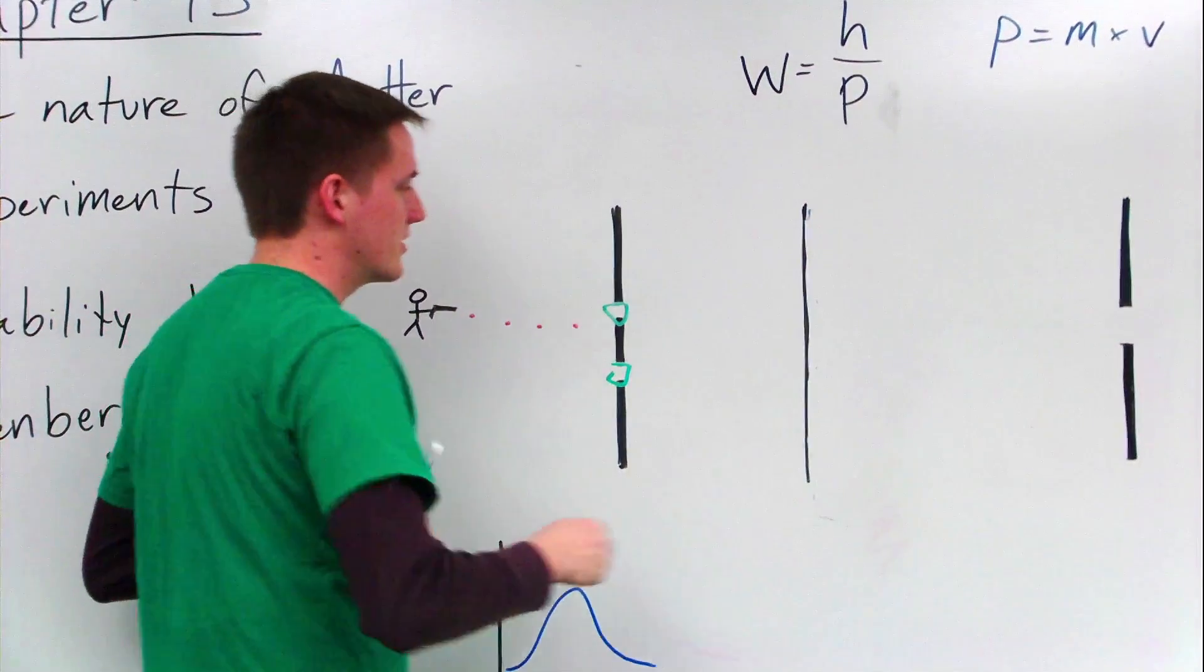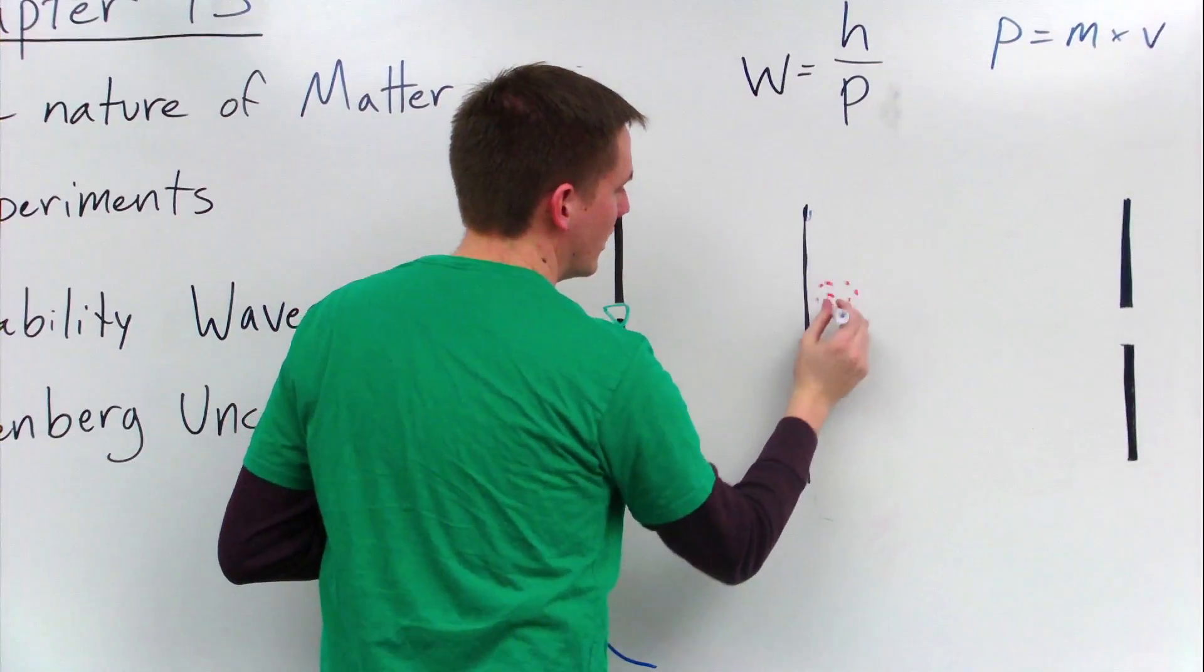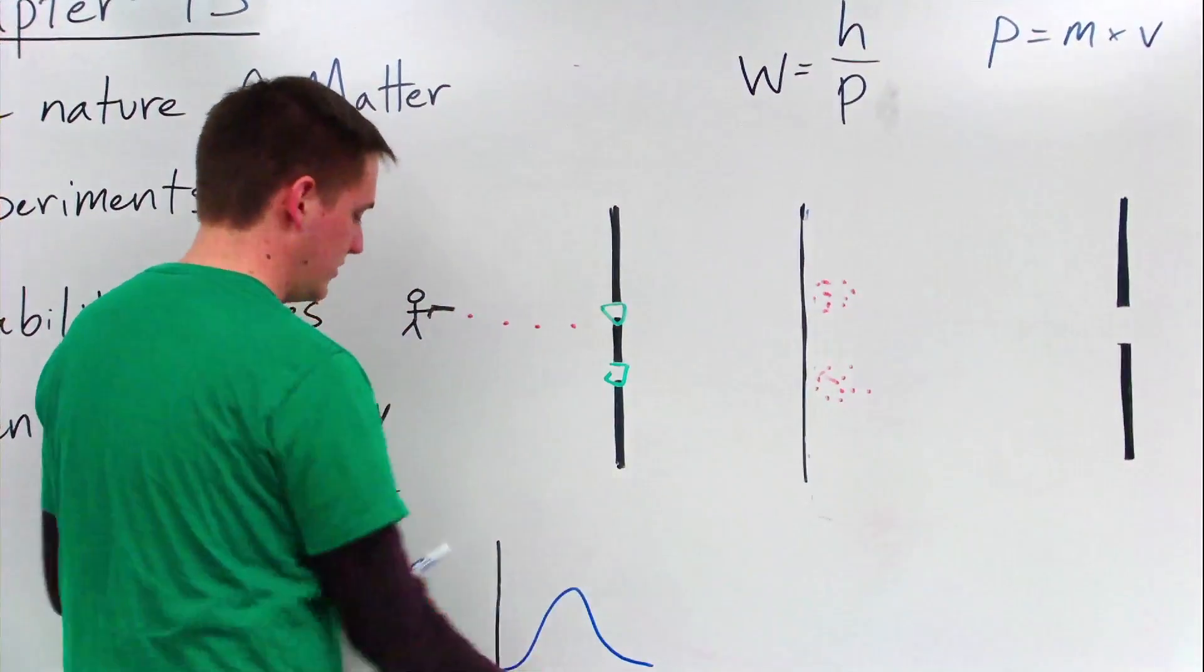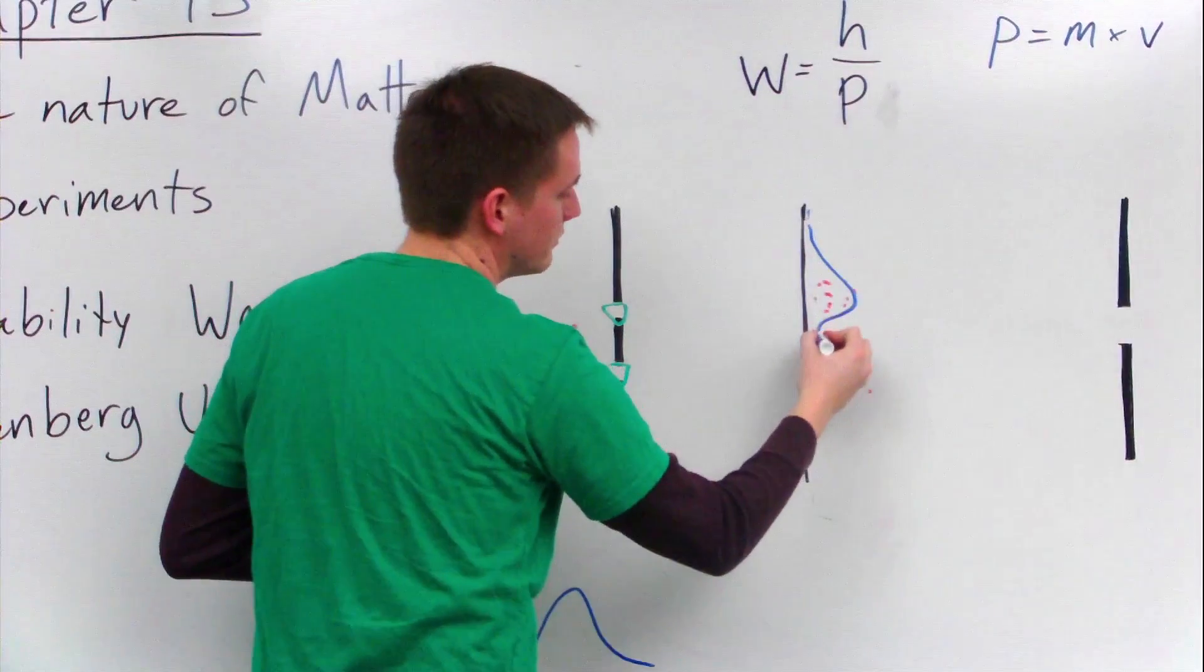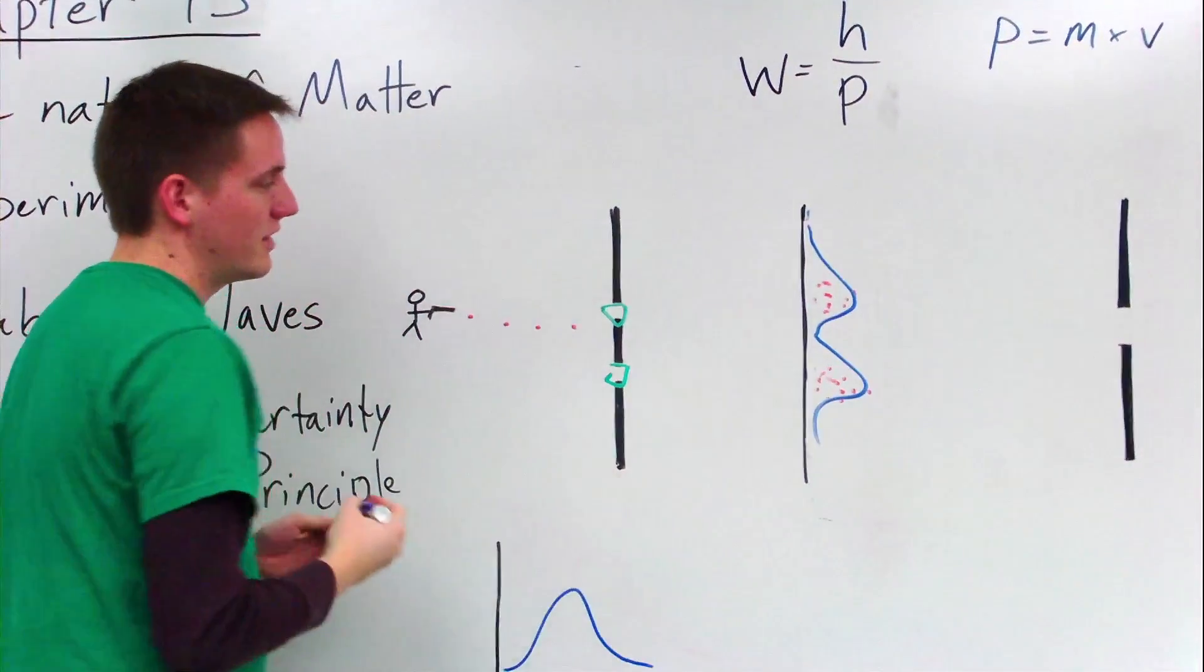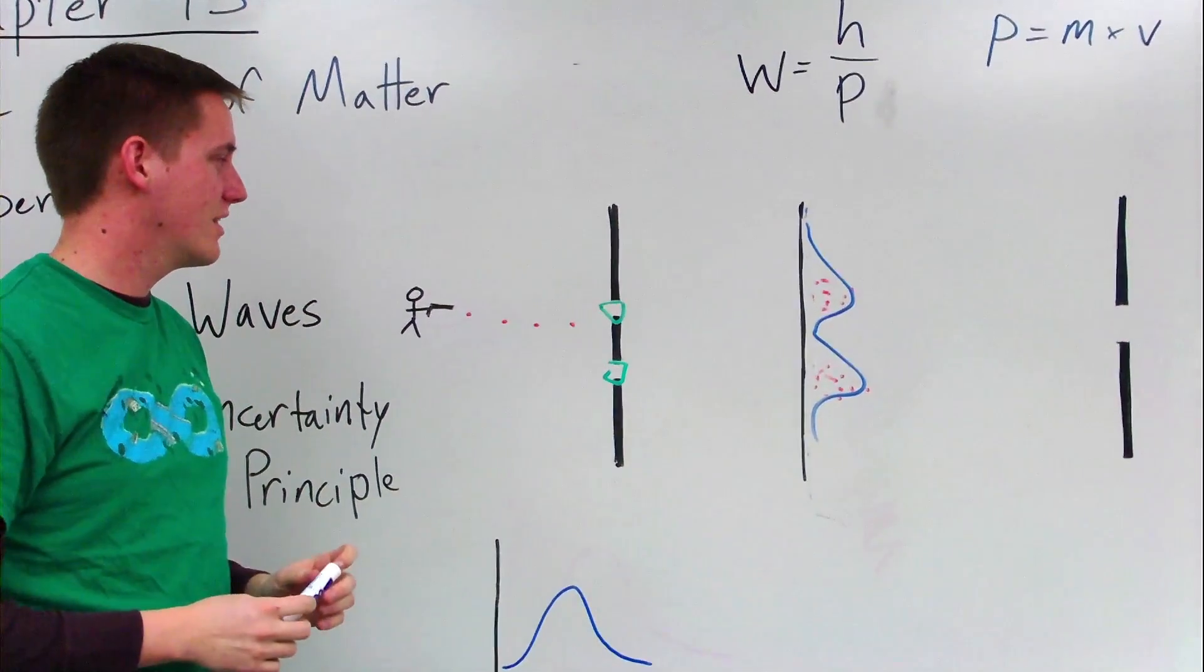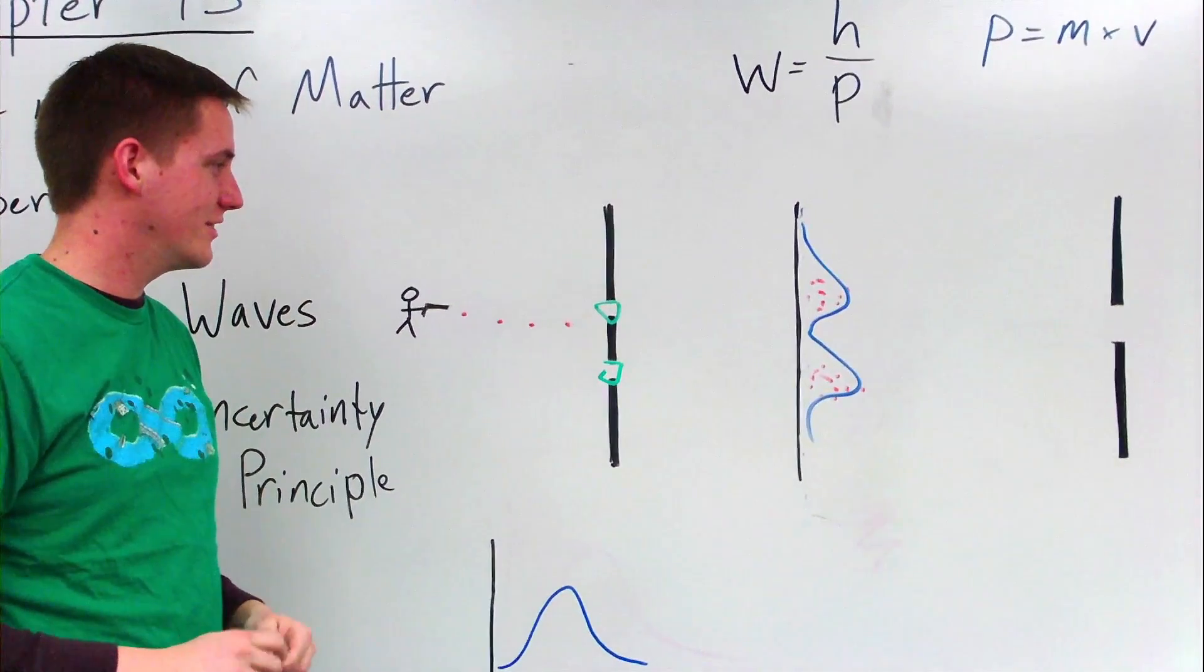And as soon as they started to measure which slit it went through, strangely enough, the electron started acting like we would expect matter to behave, and it formed that pattern that we had before with the two bumps. So that's really weird. This is quantum stuff. It's hard to understand, but that's what happens.